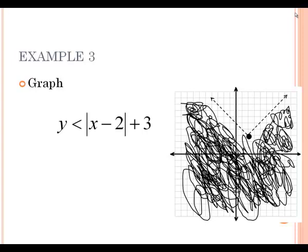If you graph this in your calculator, go to y equals, and in y1 you want to make the absolute value bars. They're under Math, Num, and then number 1 — this is abs, which means absolute value bars. Type in x minus 2, close your parentheses, and put plus 3 on the end. Tell your calculator to shade below this line because it's less than, then push graph to draw a picture of the graph. You should get a graph with everything below it shaded in.